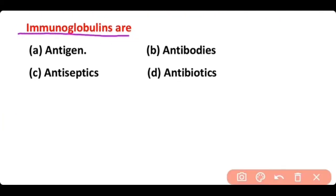Immunoglobulin refers to: antigens, antibodies, antiseptics, or antibiotics. The correct answer is option B. Immunoglobulin refers to antibodies.